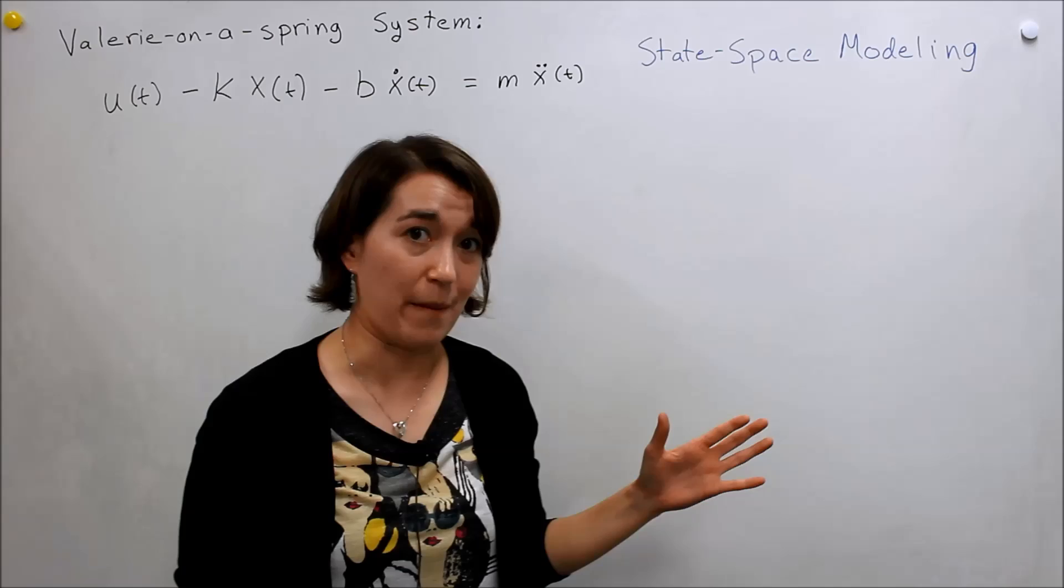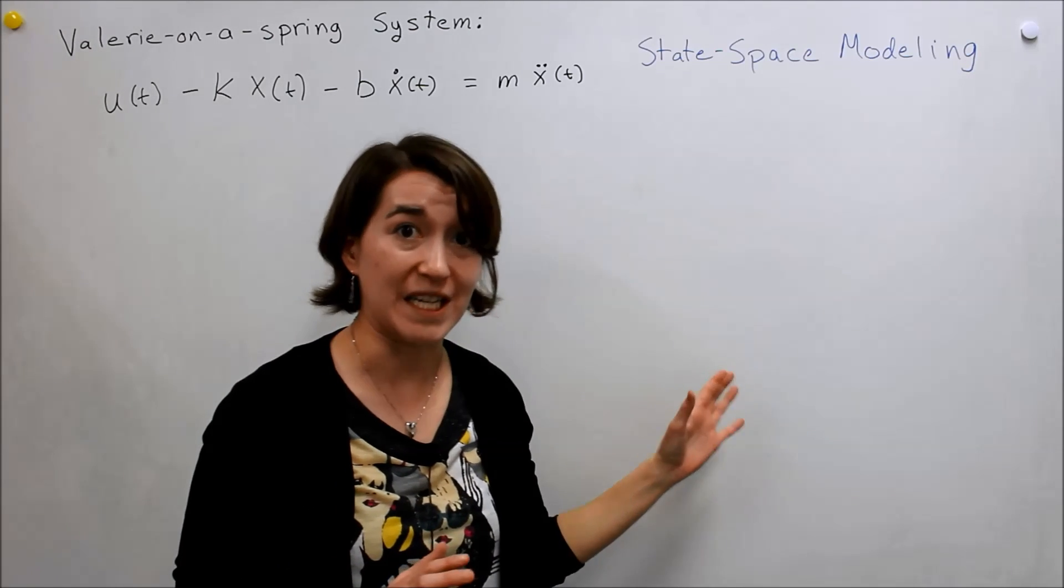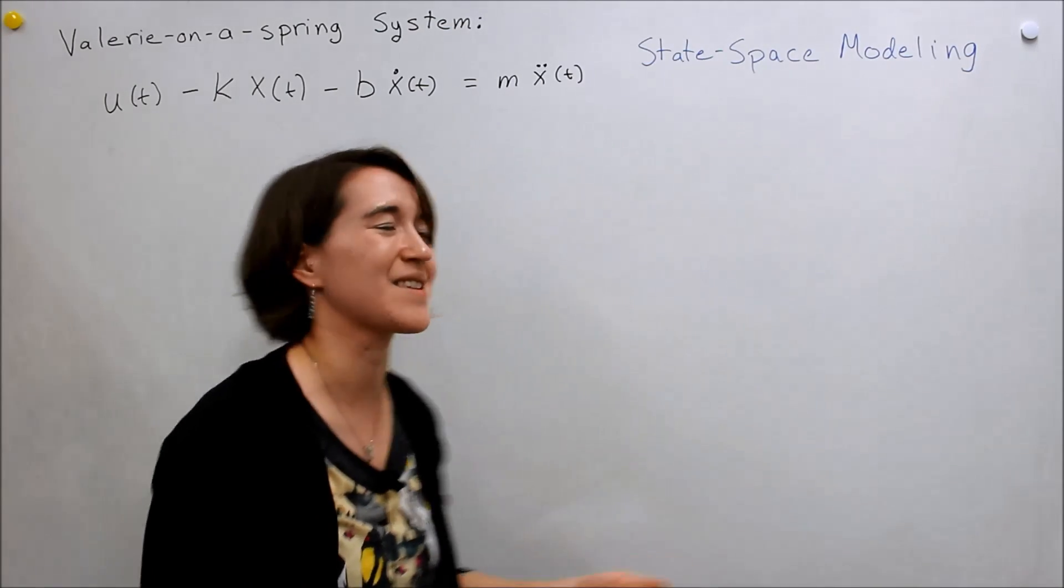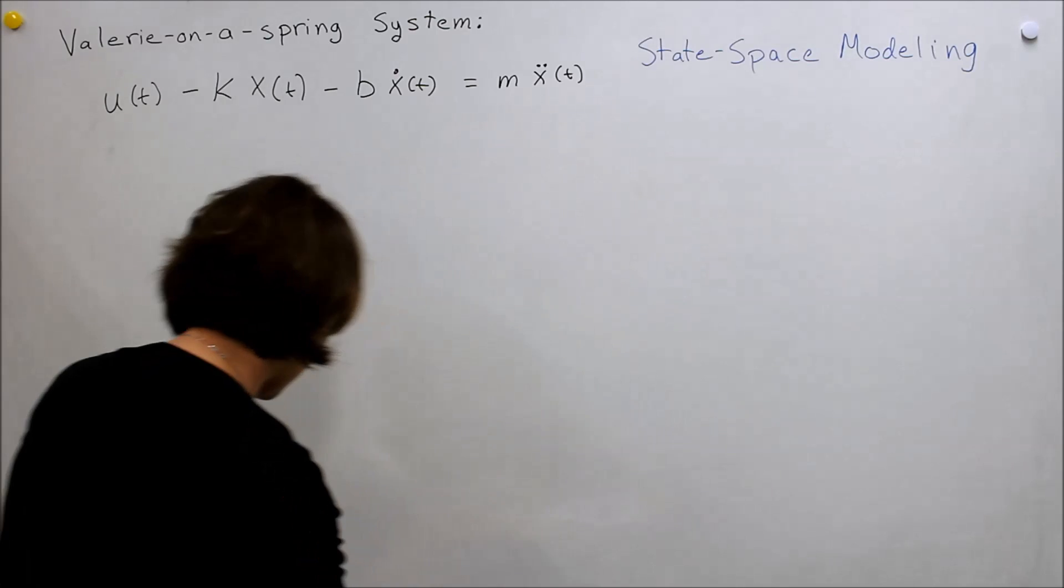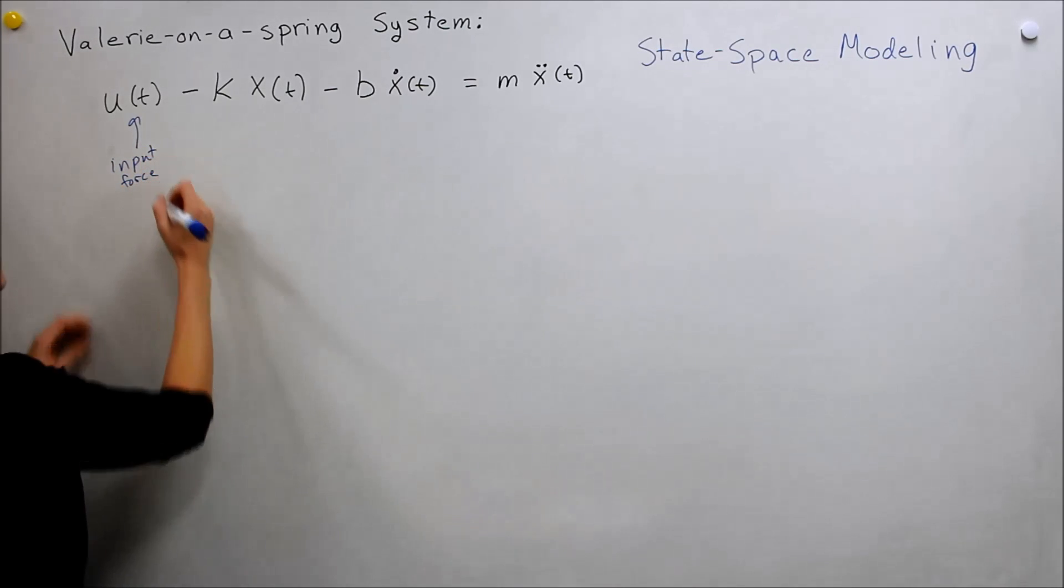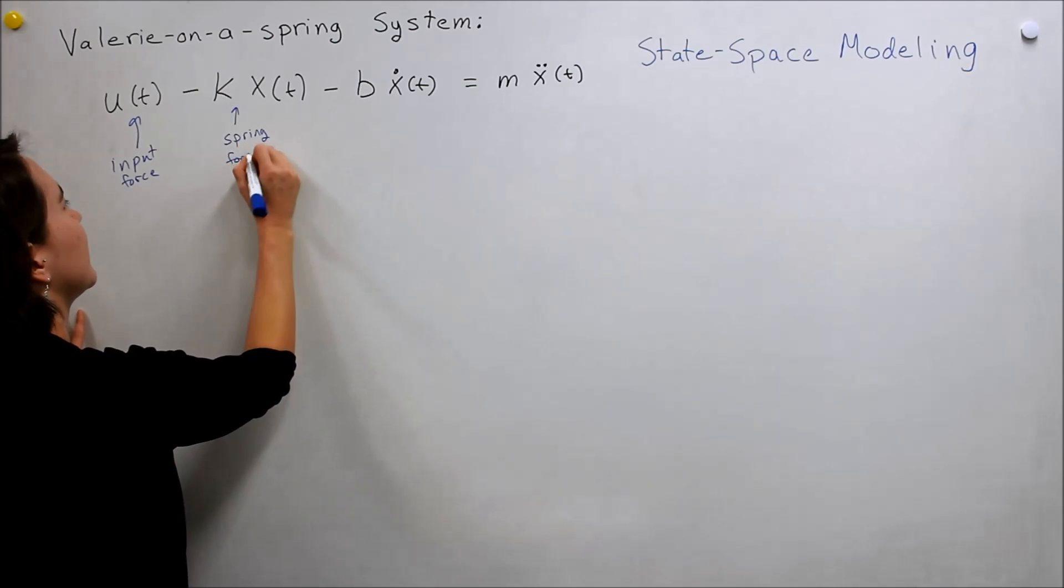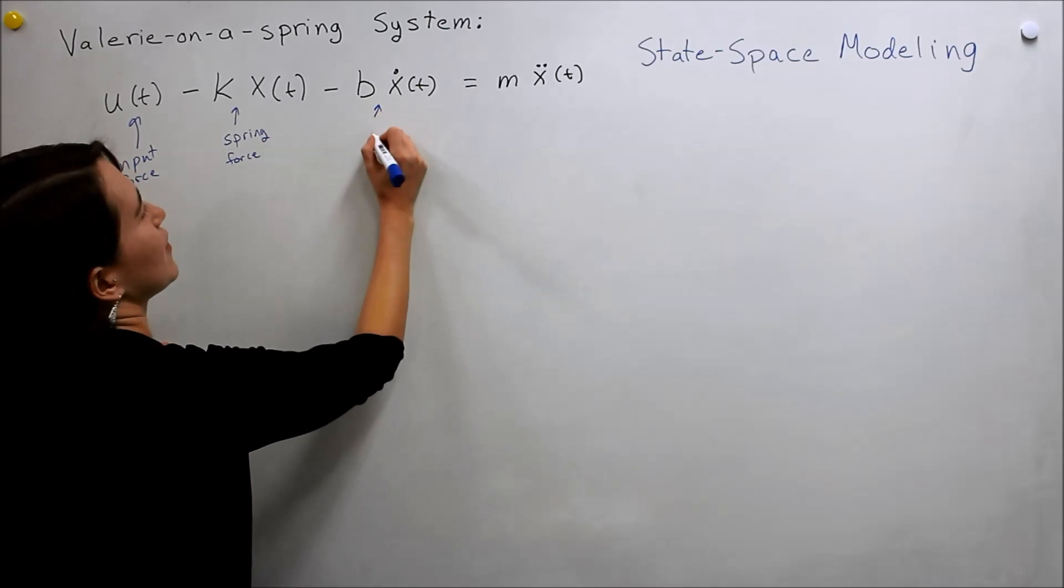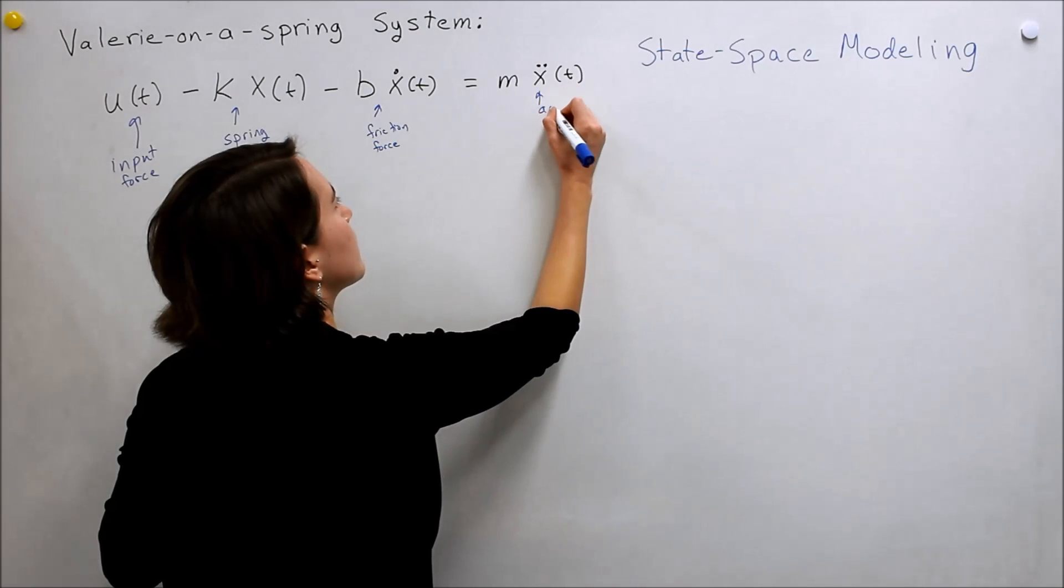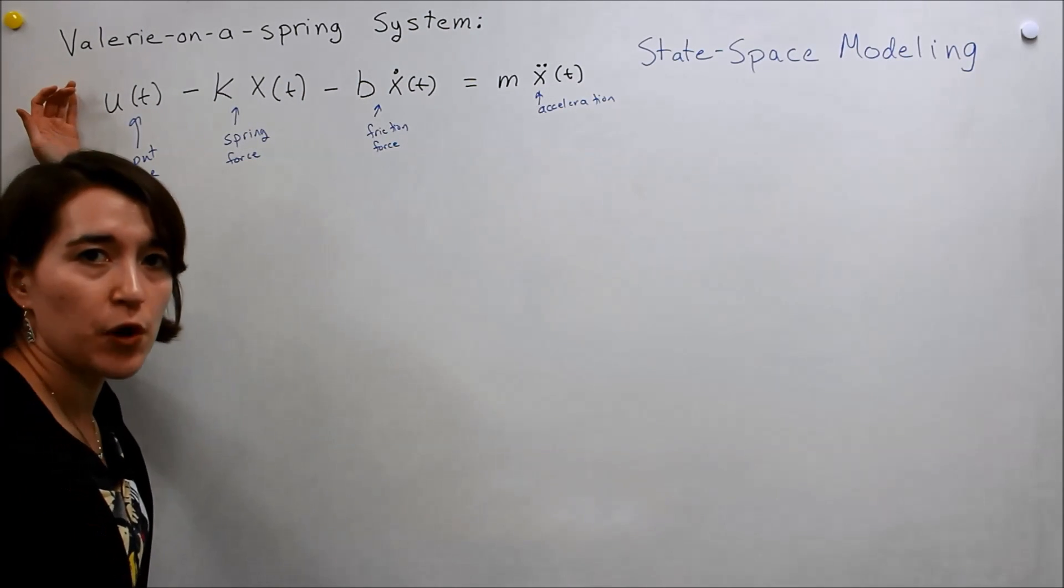First we're going to go back to an example that I hope you remember: the Valerie-on-a-spring system, where Valerie was attached to an unmovable box of green tea. So you remember the system. Here is the equation that we derived last time. Let's just remember what these things mean. This was the input force that we are putting onto Valerie, this was a spring force, this is the sum of the forces, and then this was friction. And then on the other side we had the mass times the acceleration.